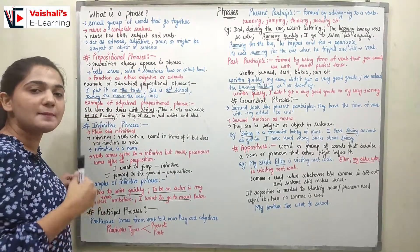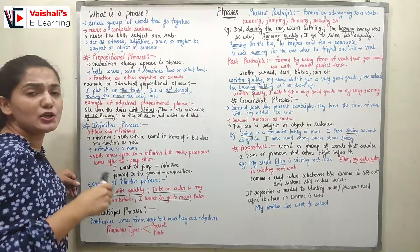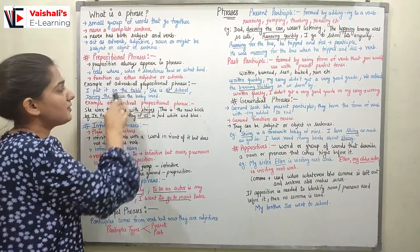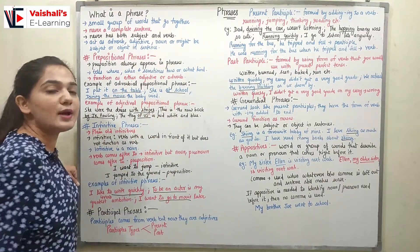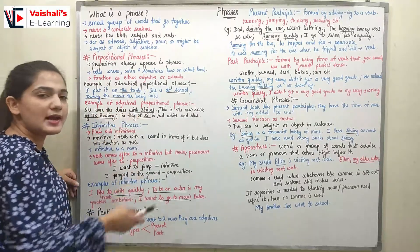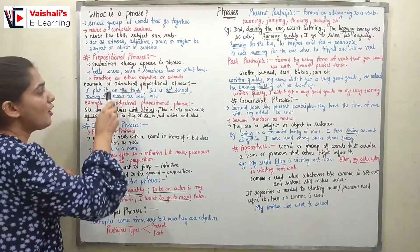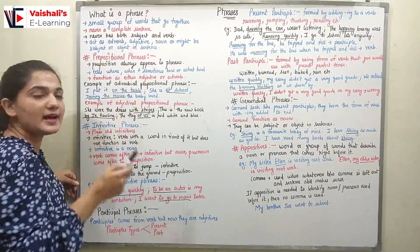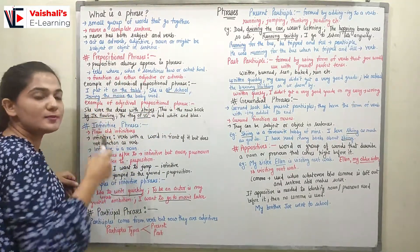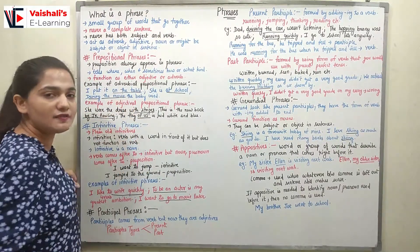Let's look at adverbial prepositional phrase examples. 'I put it on the table' — here 'on the table' is an adverbial prepositional phrase. 'She is at school' — 'at school' is an adverbial prepositional phrase. 'During the movie, the baby cried' — 'during the movie' is an adverbial prepositional phrase. 'On the table' tells where, 'at school' tells where, and 'during the movie' tells when.